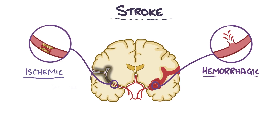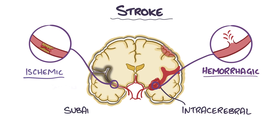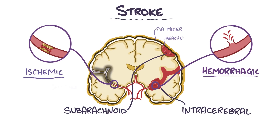Hemorrhagic strokes can be further split into two types: an intracerebral hemorrhage, which is when bleeding occurs within the cerebrum, and a subarachnoid hemorrhage, which is when bleeding occurs between the pia mater and the arachnoid mater of the meninges — the inner and middle layers that wrap around the brain. We'll be focusing on intracerebral hemorrhages, which are more common.